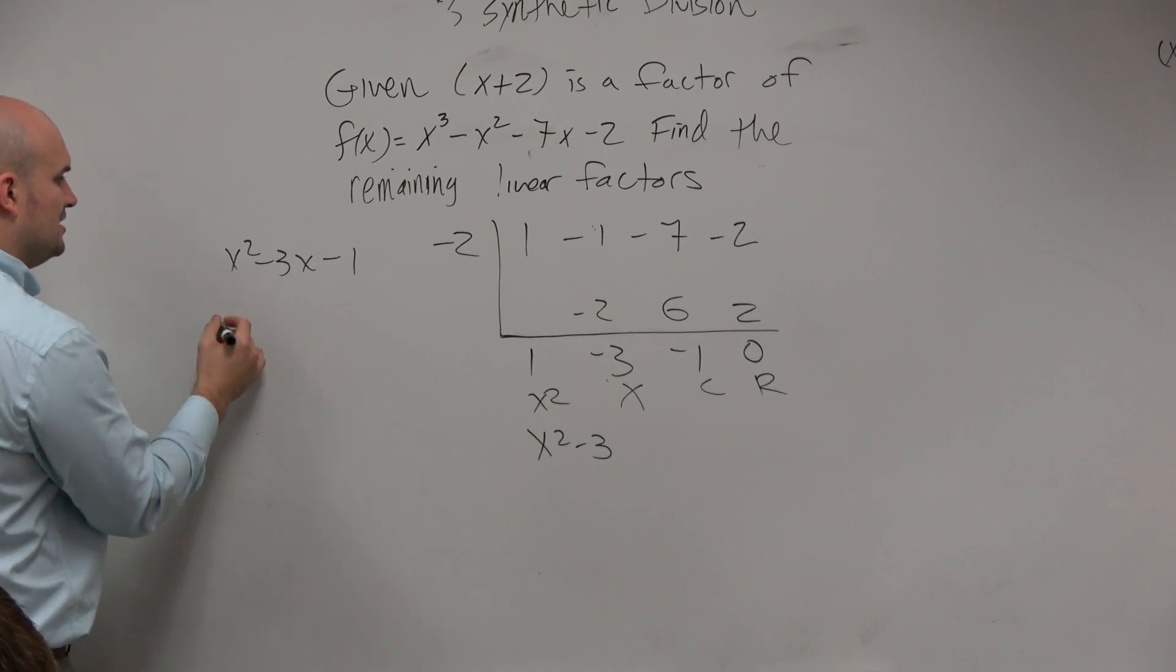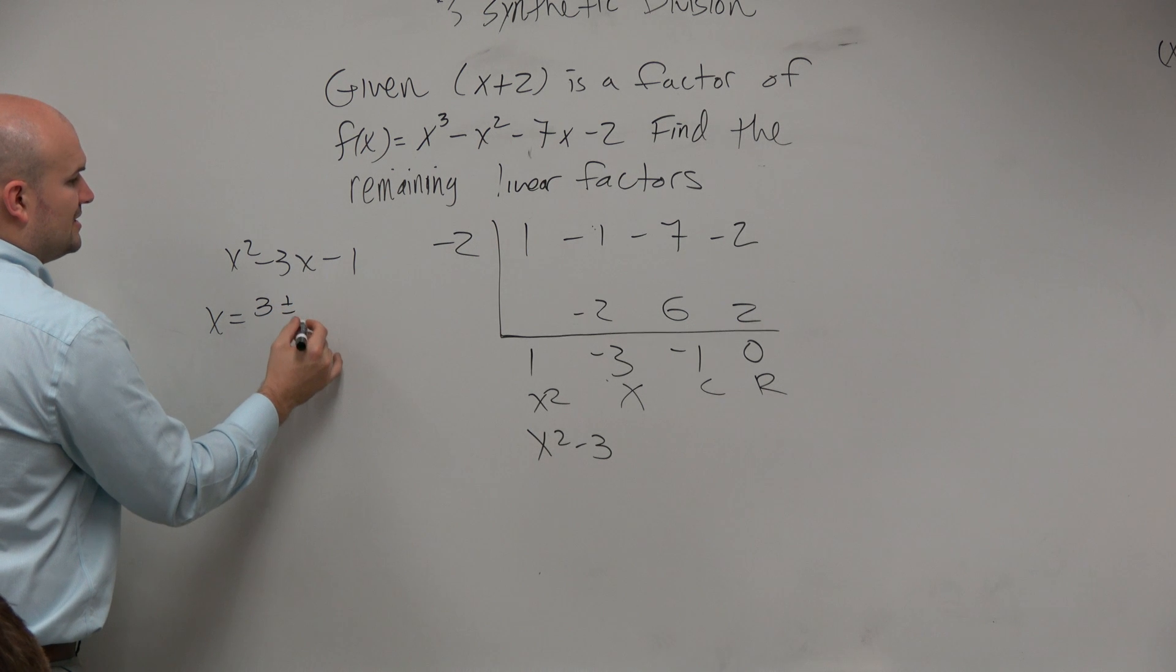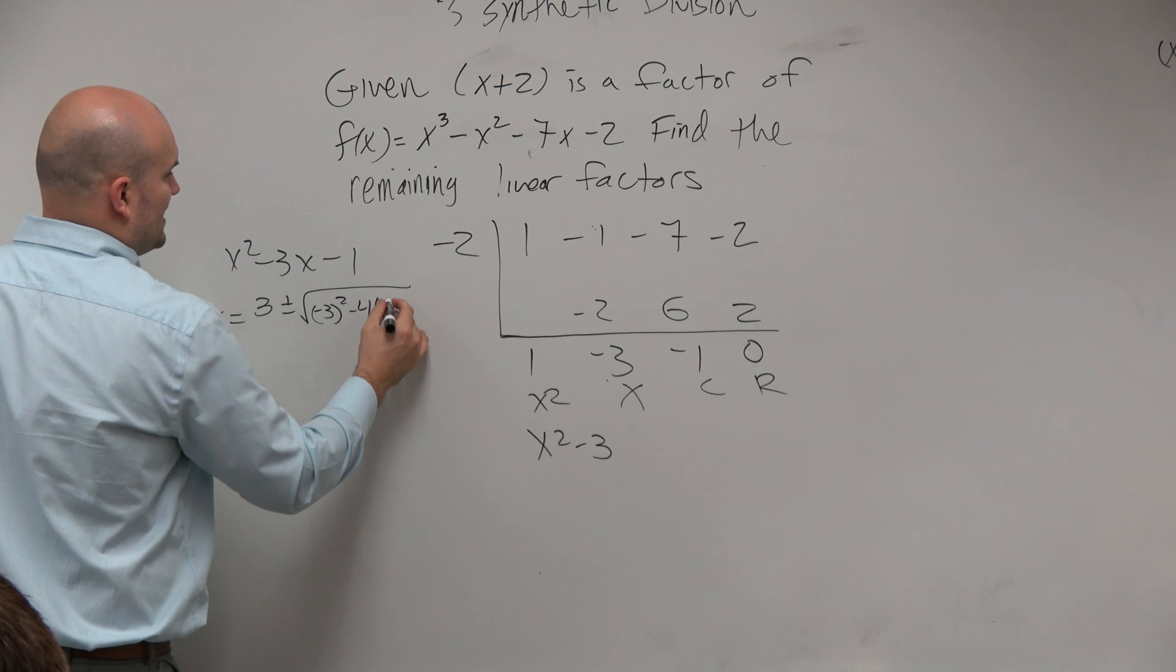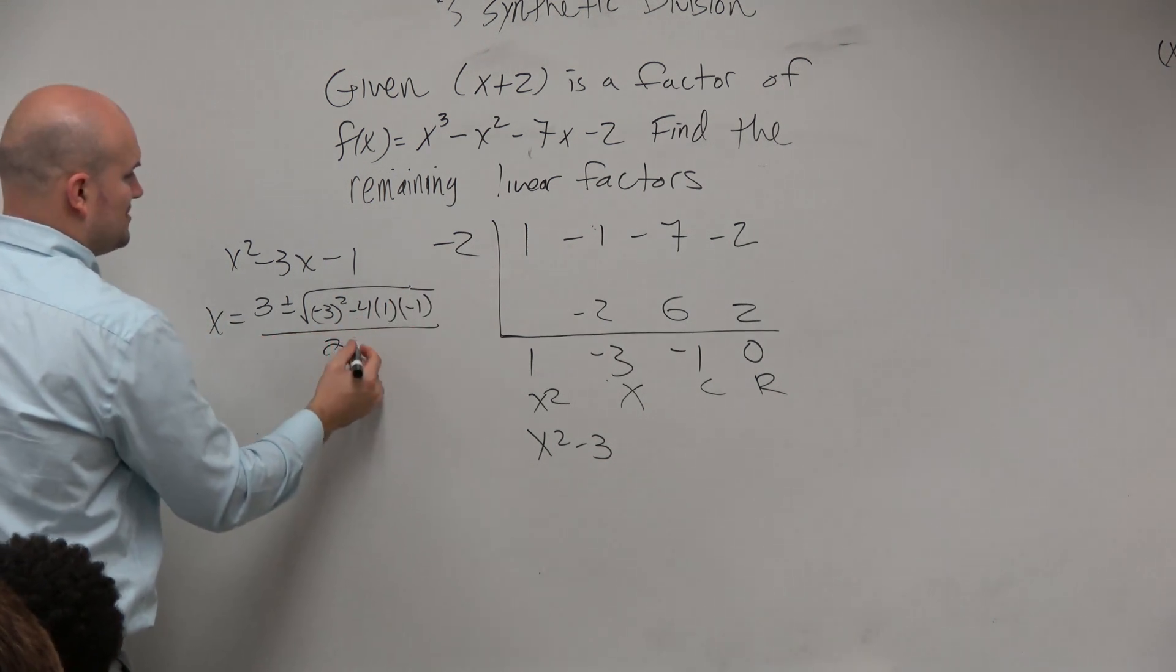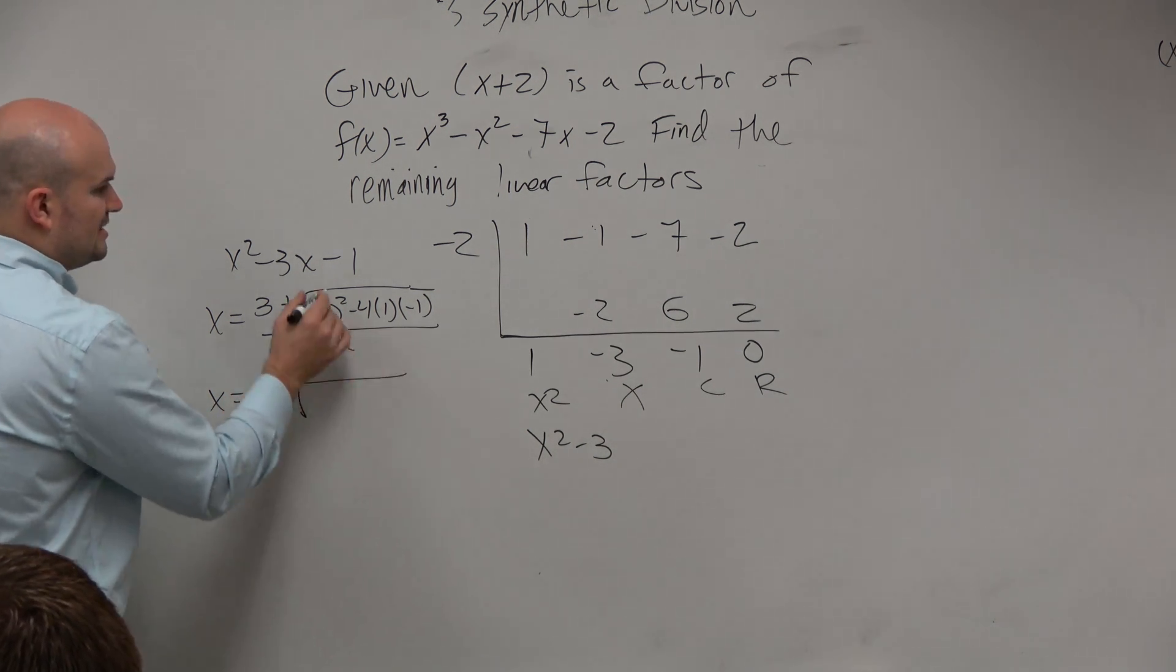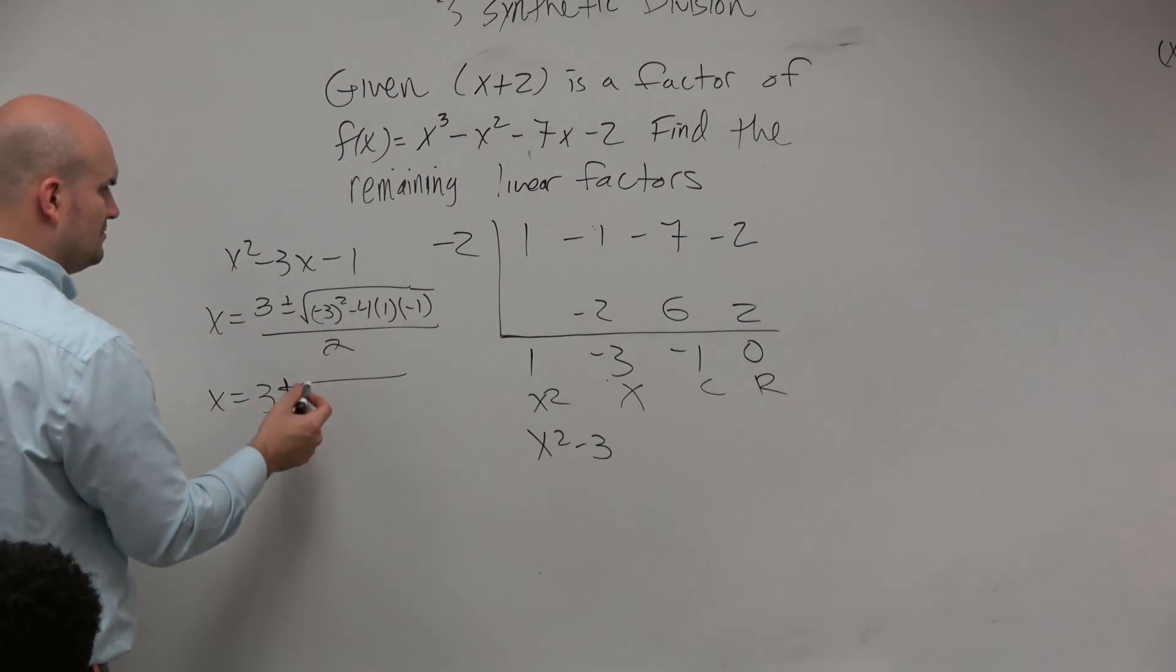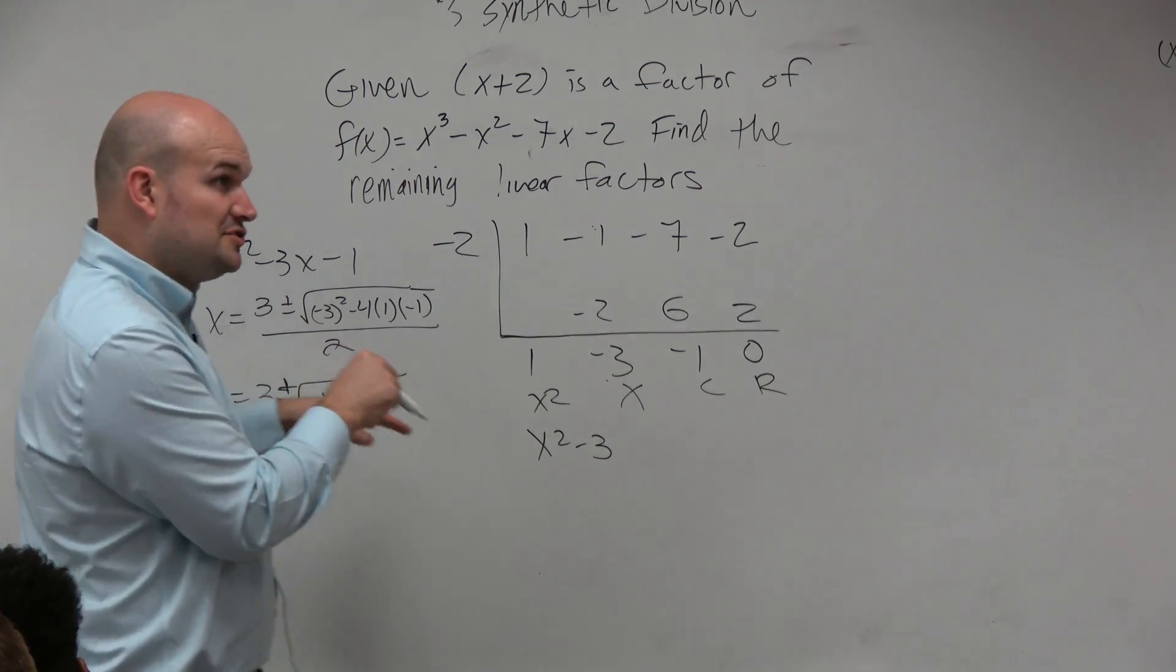So what I'll do here is I'll use quadratic formula. 3 plus or minus square root of negative 3 squared minus 4 times a times c all divided by 2 times 1, which is just 2. 3 plus or minus - let's see, it's 9 plus 4, which is 13, correct? Over 2. So these are my two zeros.